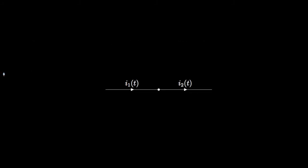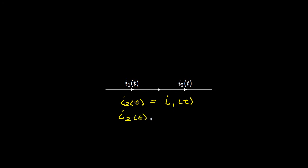We begin our introduction to Kirchhoff's Current Law, which we often call KCL for short, by looking at a simple situation where we have one current flowing into a node and one current flowing out of the node. A node in a circuit is a place where two or more wires are connected, and KCL simply tells us that the sum of the current flowing into the node must equal the sum of the current flowing out of the node. For this simple example, this means that the current I2, which has a reference direction flowing out of the node, must be equal to the current I1, which has a reference direction flowing into the node.